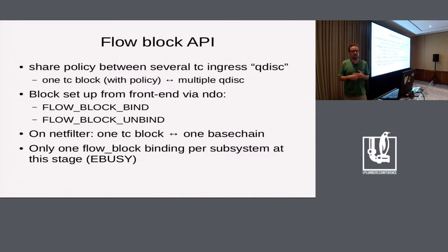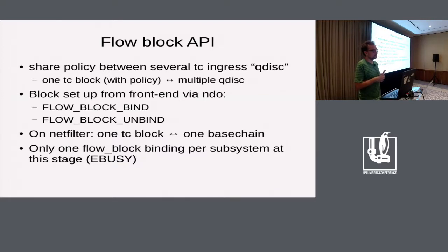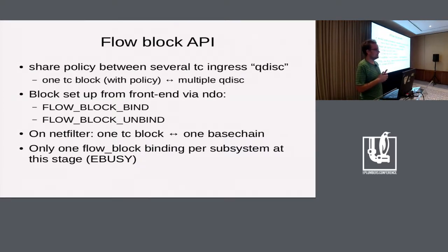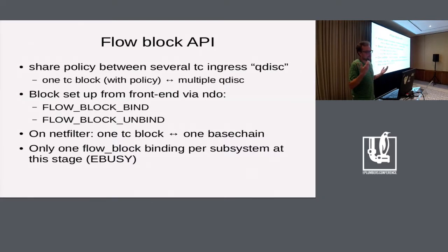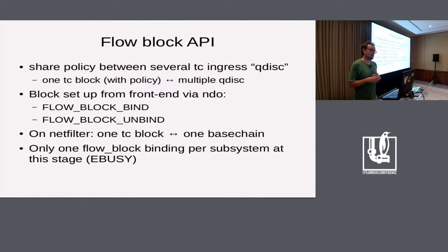Currently, only one subsystem can bind to the flow block at a time, meaning you must choose between TC or Netfilter, which is not ideal. However, there are plans — and I was told code will land in the tree soon — to allow multiple blocks, one per subsystem, so you could offload any subsystem. There should also be room to add a block for ethtool, though there are discussions about where to set up the block since ethtool has no explicit block setup step — you just directly add a rule to the NIC.